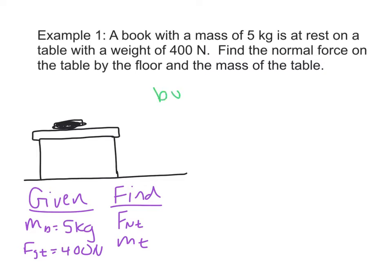First thing we want to do is draw a force diagram for each object. Start with the book. The book only has two forces acting on it: the force of gravity going straight down, as every object on Earth would have, and the table pushing up on it — so that would be a contact force by the table.